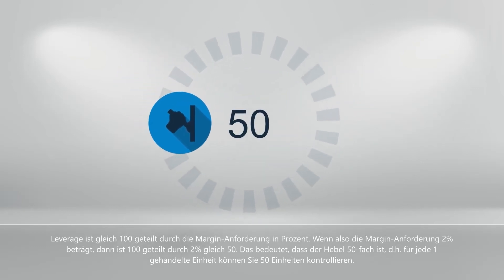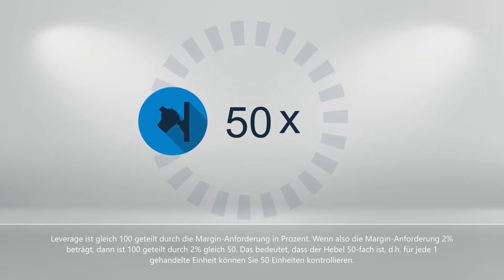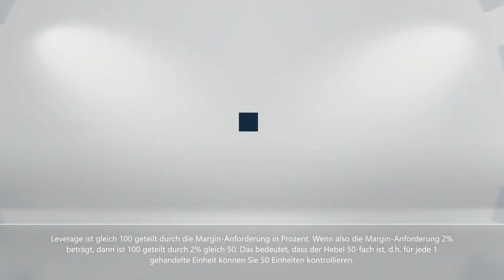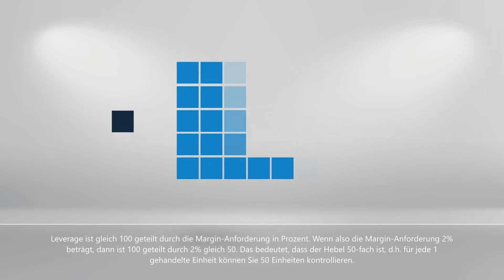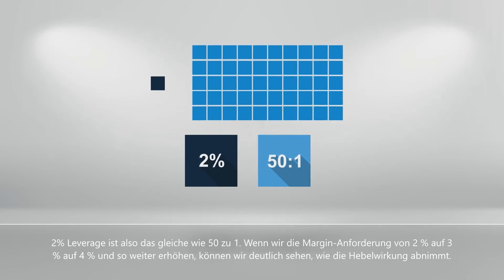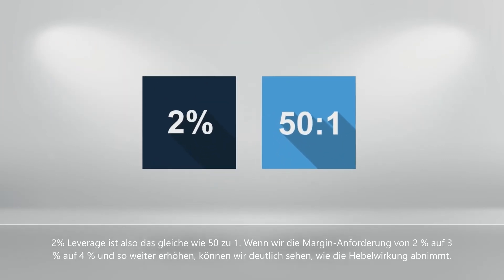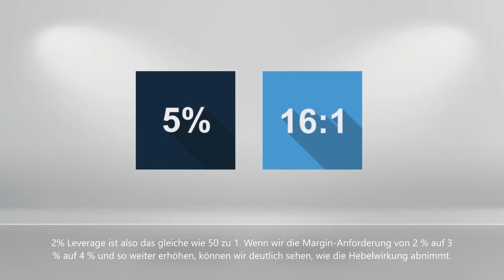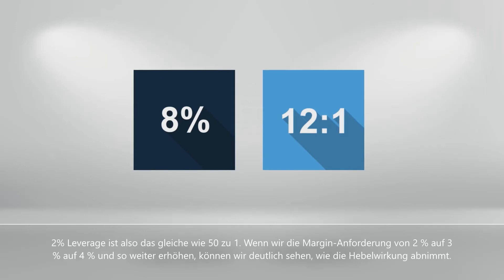So if the margin requirement is 2%, then 100 divided by 2% equals 50. This means that the leverage is 50 times — for every one unit traded, you are able to control 50 units. A 2% margin requirement is therefore the same as 50 to 1 leverage. As we increase the margin requirement from 2% to 3% to 4% and so on, we can clearly see how the leverage decreases.